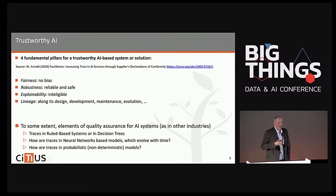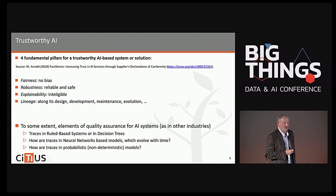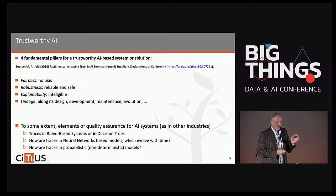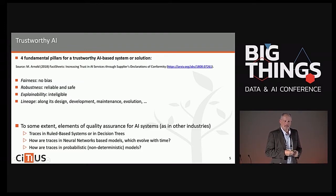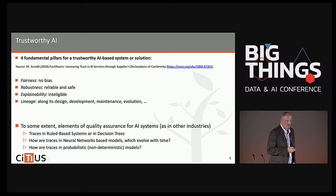Some people relate explainability and trustworthy AI with the general idea of quality — ensuring quality, validating, and testing systems properly. This is a key issue in some applications. Particularly when machine learning is involved, what happens with the evolution and change these systems undergo? Which trace can we follow from the initial system to its final state as it evolves through time?